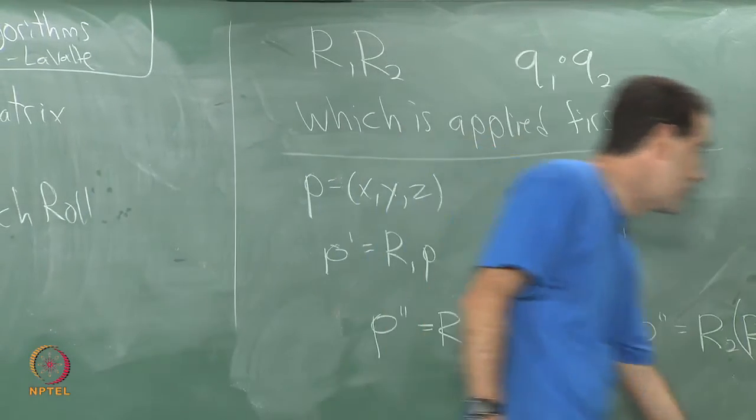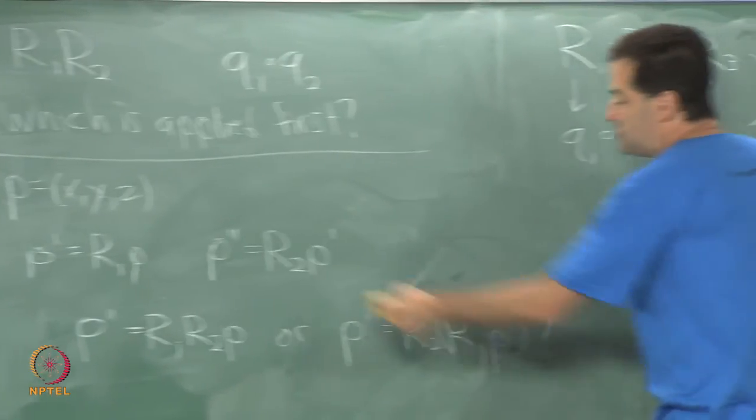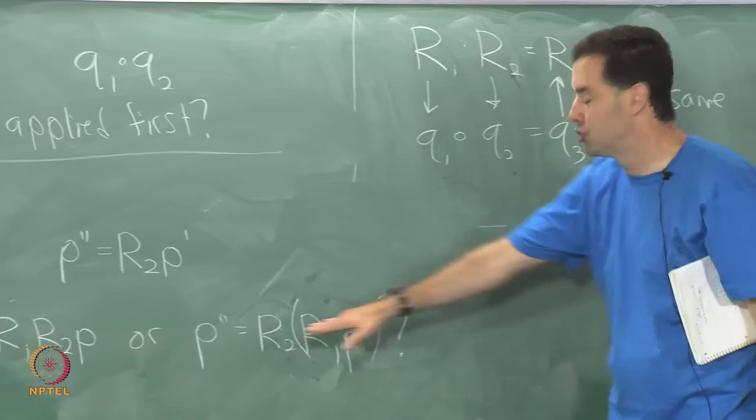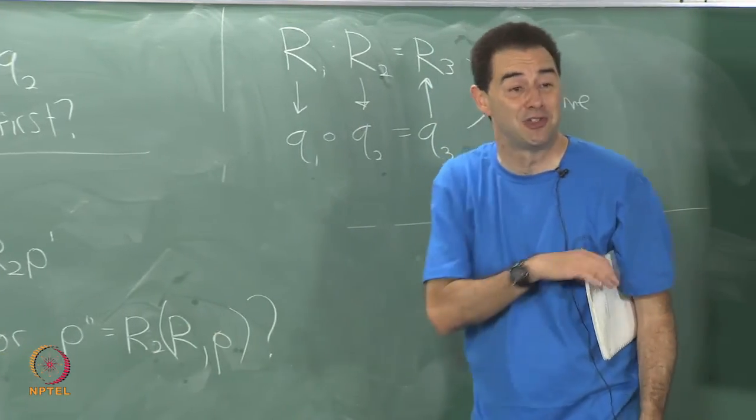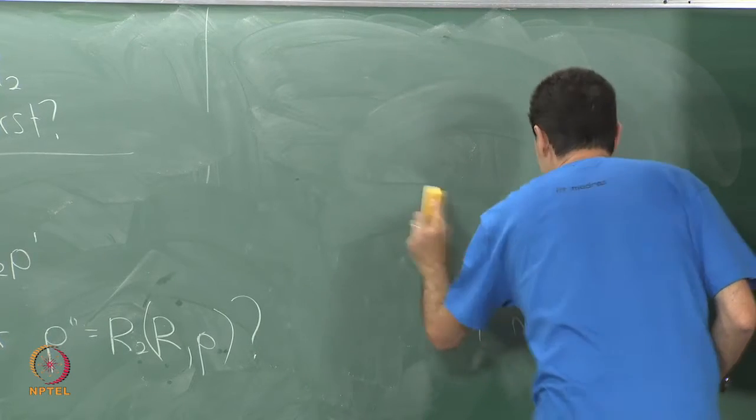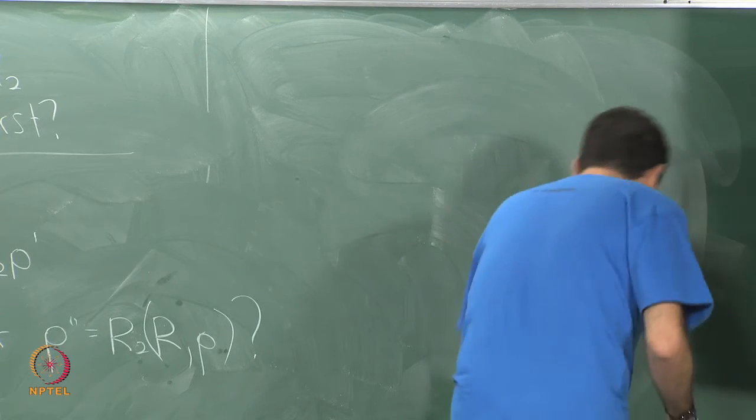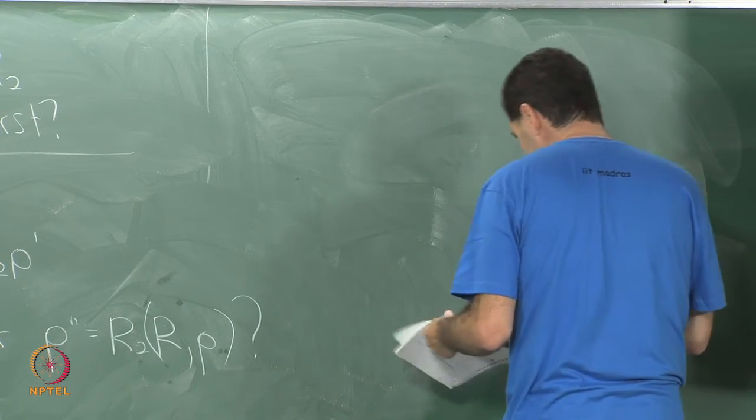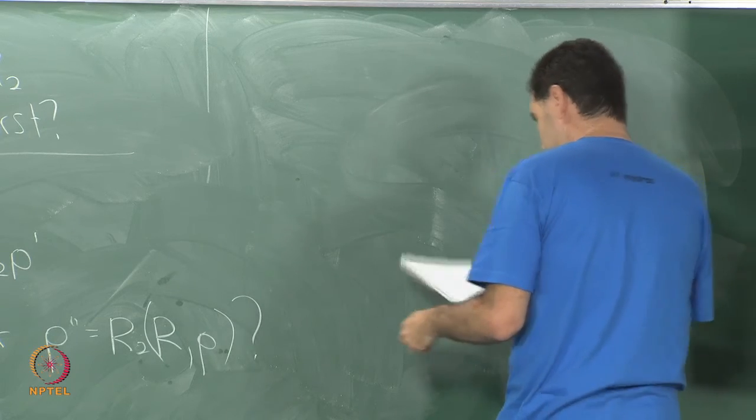The order of operations matters because of non-commutativity and just when you see a chain of matrices make sure you are correctly interpreting the order of operations. It is very easy to get that backwards, it is a common source of mistakes and another thing is when you do inverses as we have talked about just make sure you are applying the proper inverses.